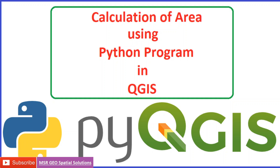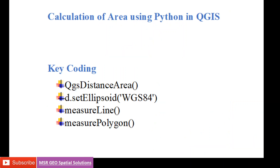The main key code to do the process is QgsGeometry in the form of QgsDistanceArea. The general purpose of the code is to calculate distance and area. Calculations can be done on an ellipsoid in any CRS. It is useful to measure distance and area using measure line and measure polygon.